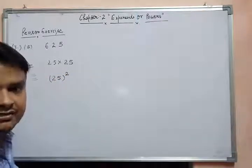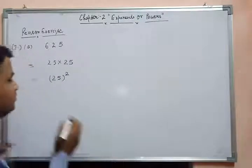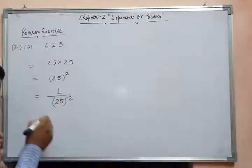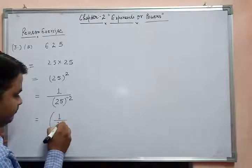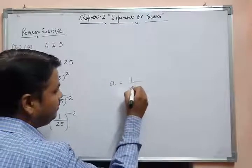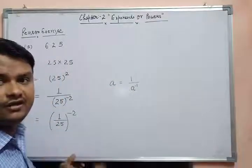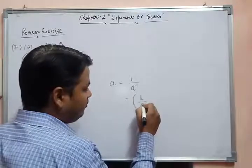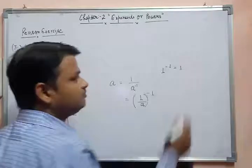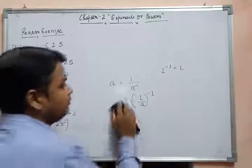This is not your final answer because the question asks you to express it with a negative exponent. You have to write the solution using negative exponents, so it can also be written as 1 upon 25 to the power minus 2. You all know that A can be written as 1 upon A to the power minus 1, because 1 to the power minus 1 equals 1 — any exponent of 1 is always 1.